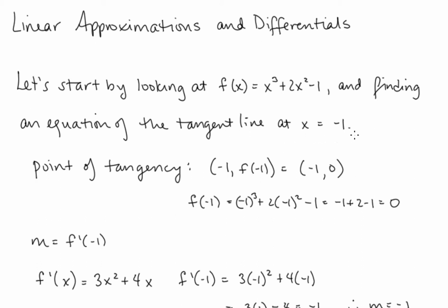We know that our point of tangency is going to be negative 1, f of negative 1. Plugging x equals negative 1 into our function, we get negative 1 to the third plus 2 times negative 1 squared minus 1, which gives us negative 1 plus 2 minus 1, equal to 0. So our point of tangency is negative 1 comma 0.